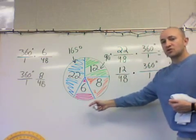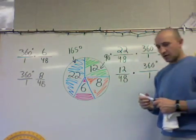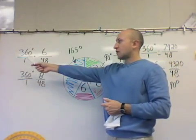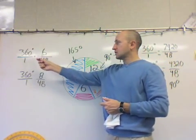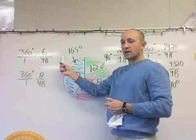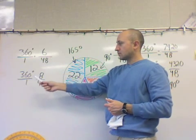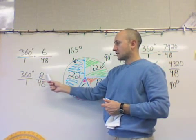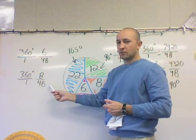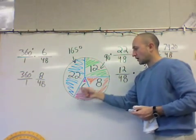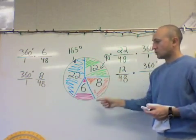And then we continue on with our 6 and 8 doing the same thing. We just have to multiply 360 times 6, get our answer divided by 48, multiply 360 times 8, get an answer divided by 48. And that will give us the remaining two angle measurements.